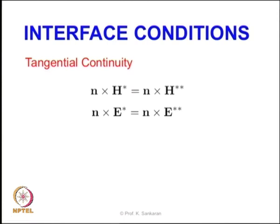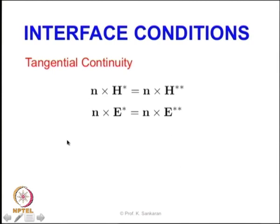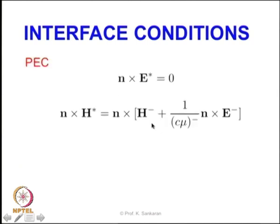For special interface conditions, when the top layer of the waveguide is modeled as a perfect electric conductor (PEC), we know that the tangential component of the electric field becomes equal to zero. That is the PEC special interface condition. The tangential component of the magnetic field must then be computed using the given equation. For a staggered grid, this equation must be adapted; for non-staggered methods like finite elements and finite volumes, the formulation can be used directly.